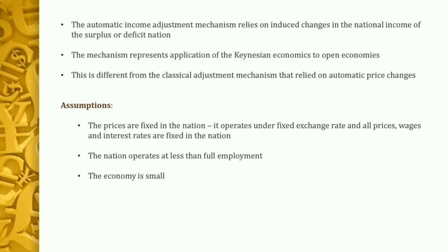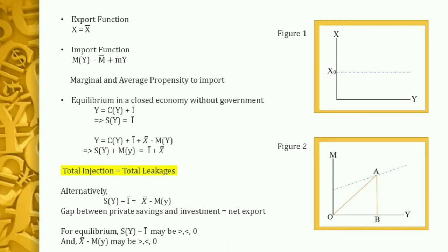Any change in income will definitely have its own impact on currency prices, commodity prices, and factor prices. Therefore these two types of adjustments are likely to act simultaneously, and a synthesis is definitely required. Let us now consider how the equilibrium national income is determined in a small open economy. Unlike the closed economy, here we have two separate functions: the export function and the import function. The export function is given as X = X̄, exogenously given and independent of the level of income.